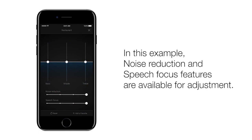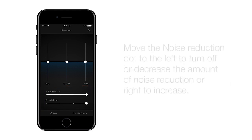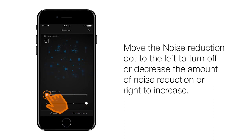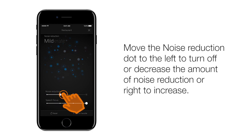In this example, noise reduction and speech focus features are available for adjustment. A box appears around the sliding scales at the bottom labeled Noise Reduction and Speech Focus. Move the noise reduction dot to the left to turn off or decrease the amount of noise reduction. Sliding it all the way to the left — the base, middle, and treble dots disappear. Noise reduction: off.